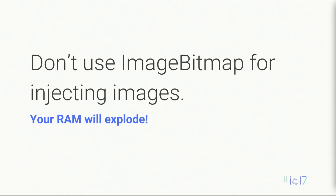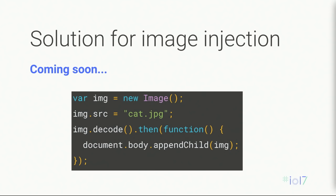Another use case where we experience jank from image decodes is image injection — when a page adds images to existing content by injecting them. Examples are really long scrolling pages with lots of images, like a news website or social media feed. Using ImageBitmap for all image resources there could cause us to run out of RAM. So there's another solution: a new decode function being added to the HTML image element interface. When you call it, it triggers a decode that can happen on a separate thread, and a promise resolves when done — that's a good time to append the image to the document without causing jank.